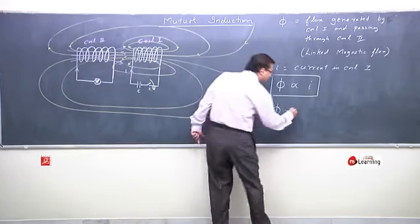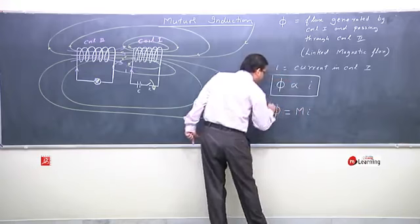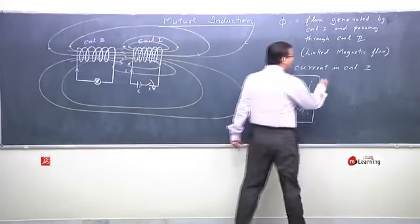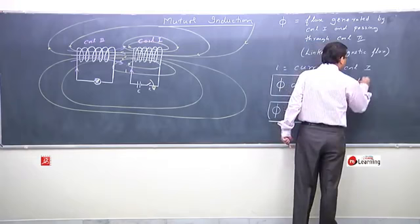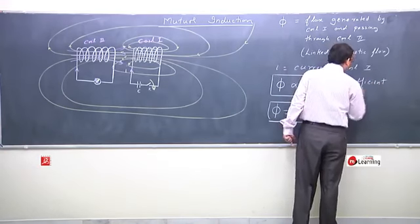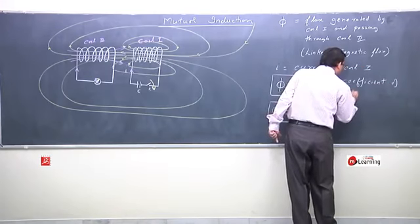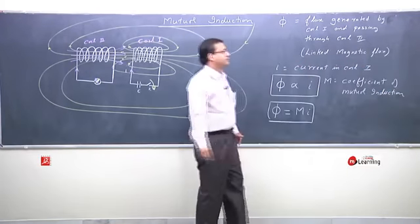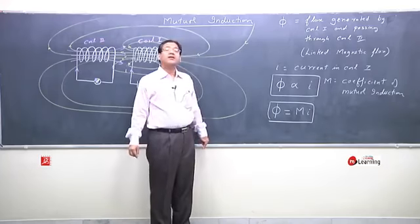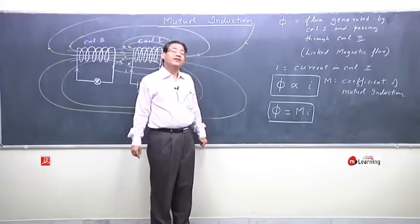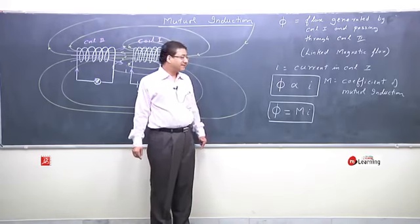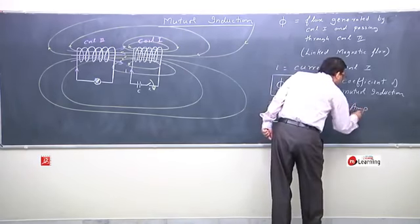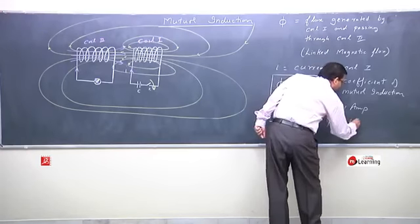Removing the proportionality sign and adding an equality sign with a constant M: phi equals M times I. Here this M is termed as the coefficient of mutual induction. One can define the coefficient of mutual induction as: if current is 1 ampere, the flux linked would be M.